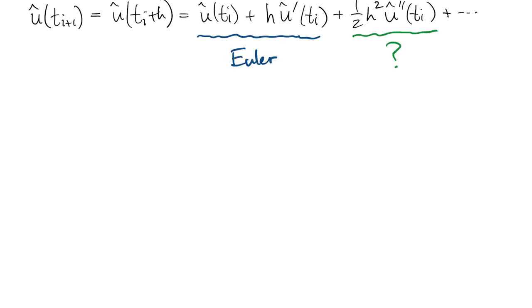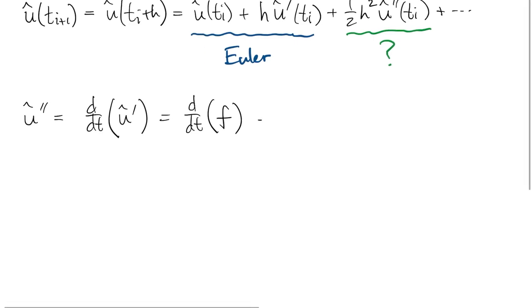If we want a higher order of accuracy, we have to do something to pick up the next term which has u-hat double prime in it. u-hat double prime is the time derivative of u-hat prime, which itself is just f by virtue of u-hat solving the ODE.